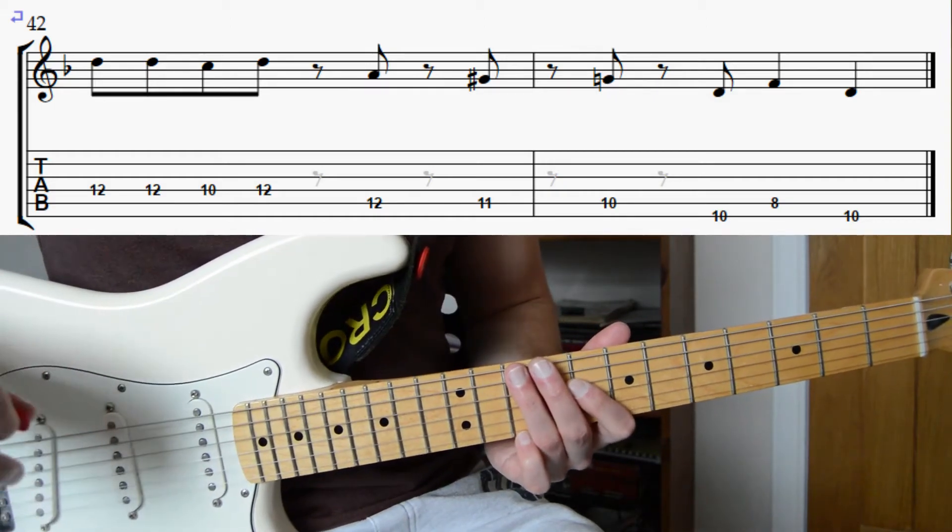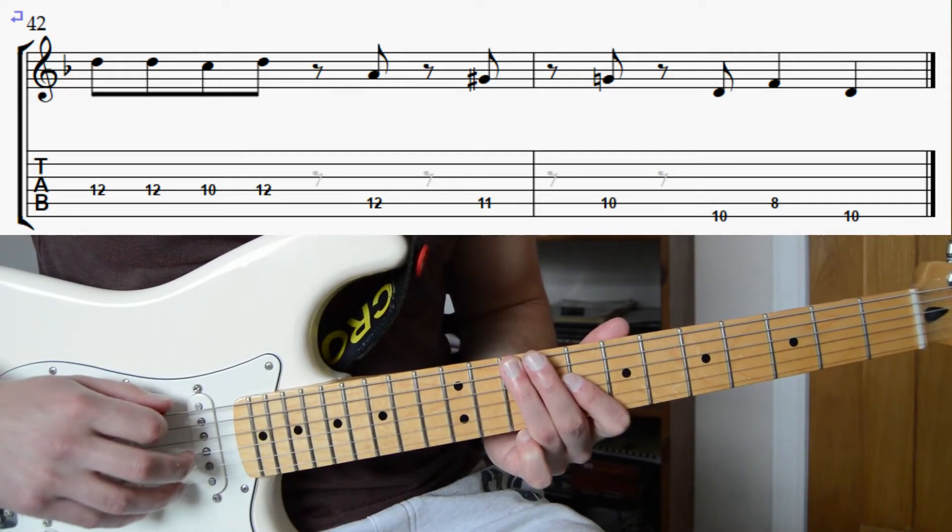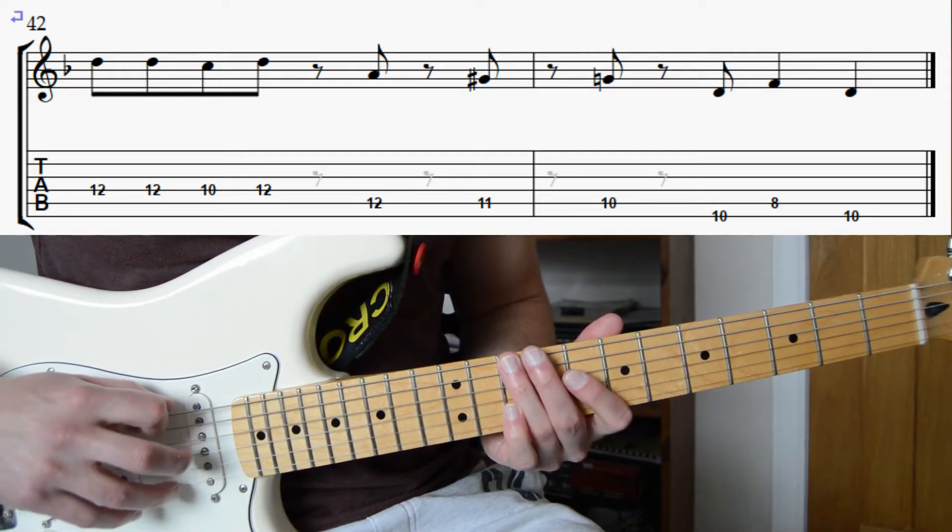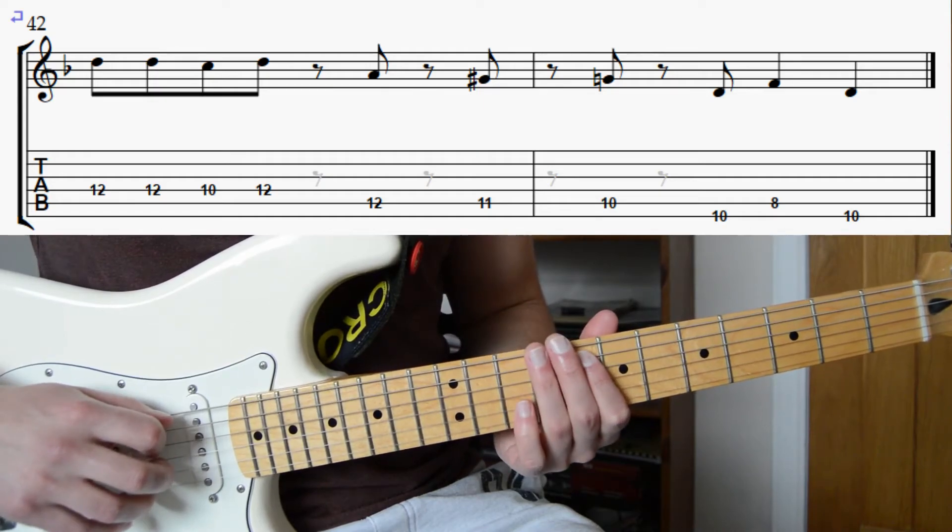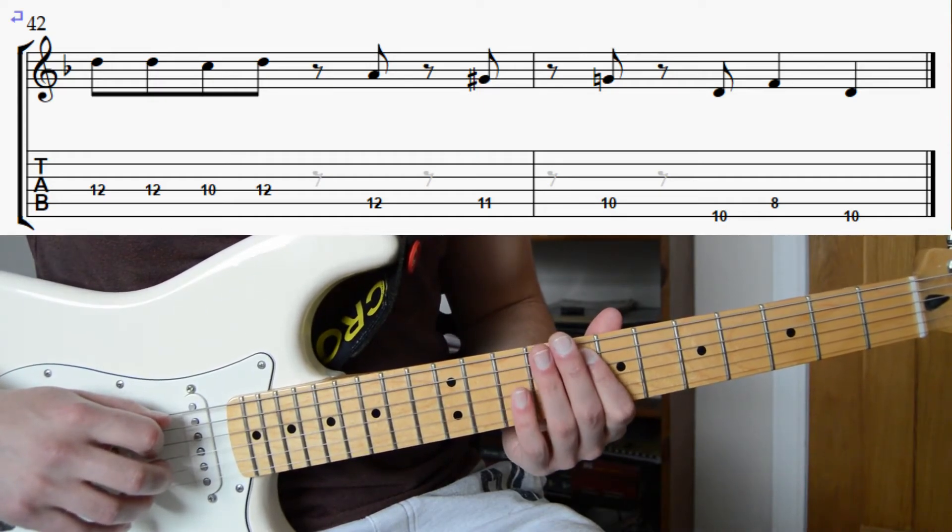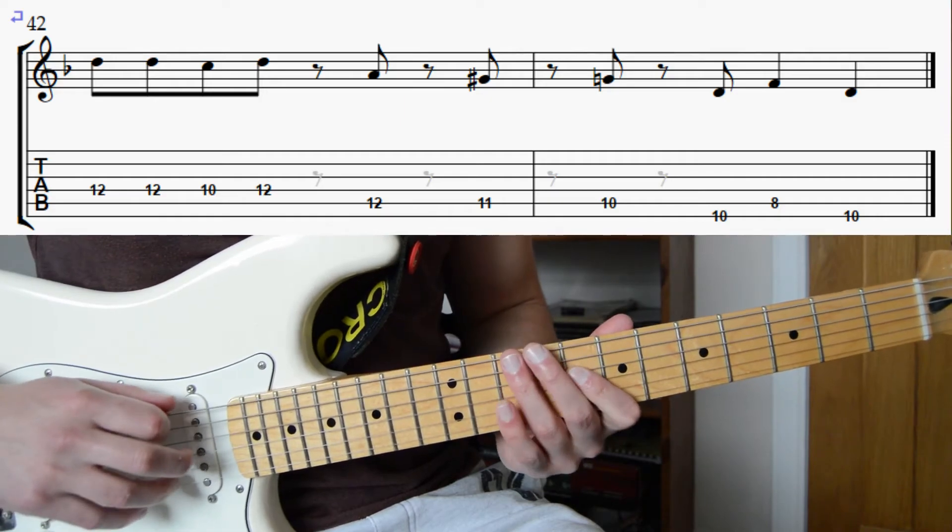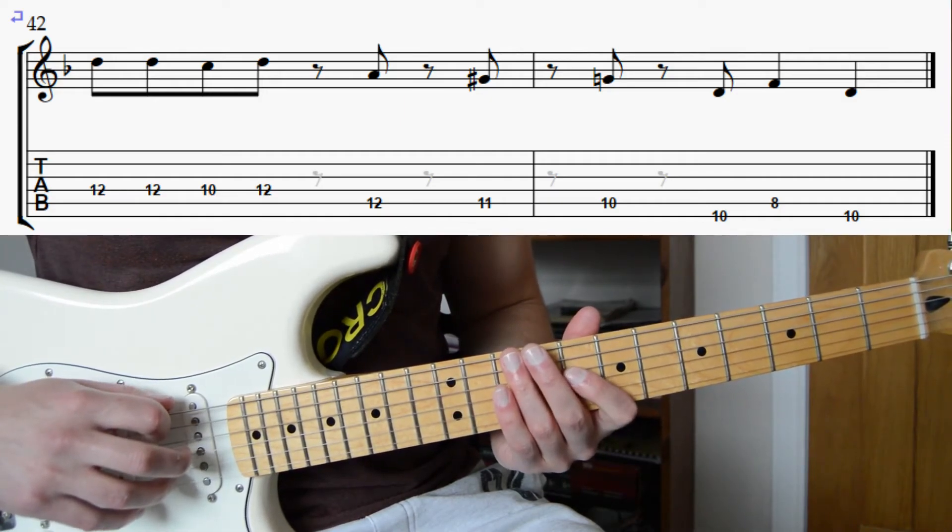Then we're going to move our third finger onto the 10th fret of the low E string. I'm going to play that note once. Then the 8th fret on the A string with our first finger, and then the 10th fret on the low E string again.